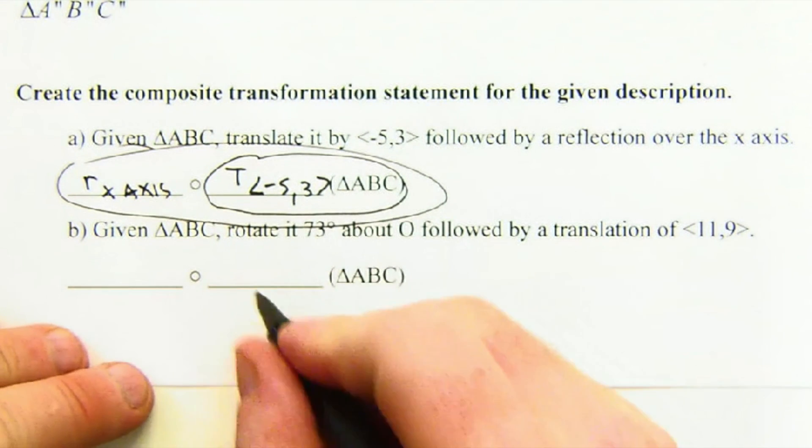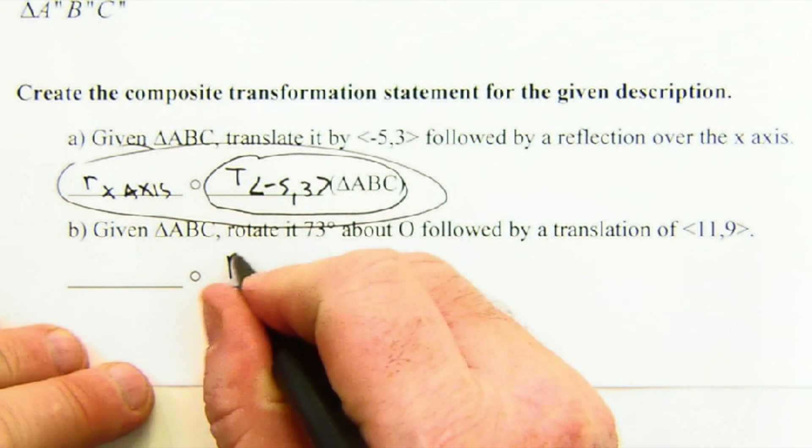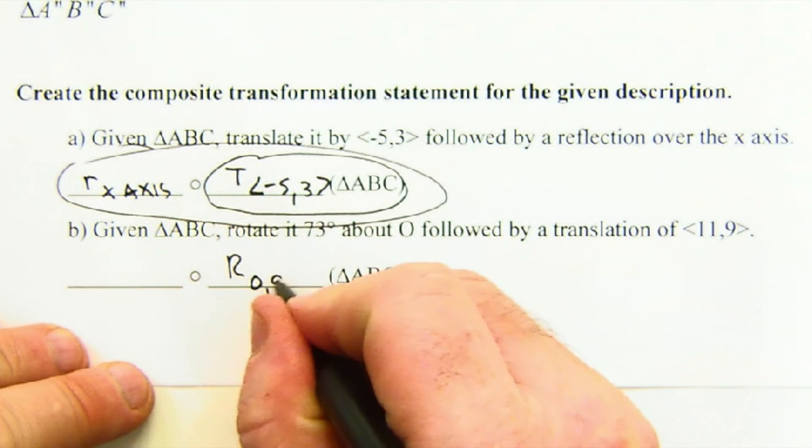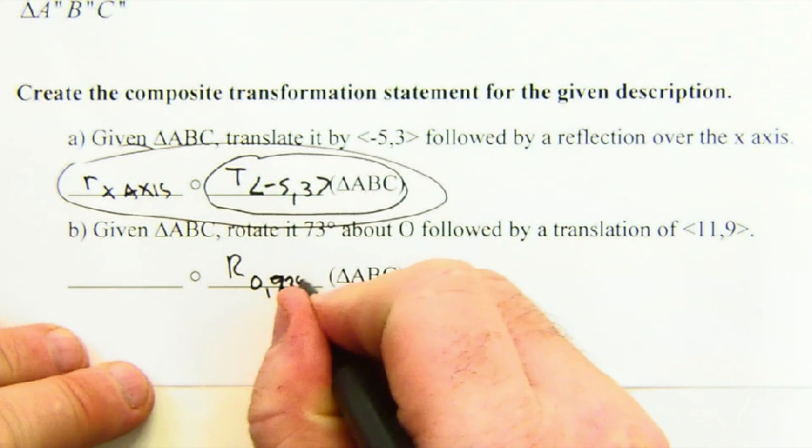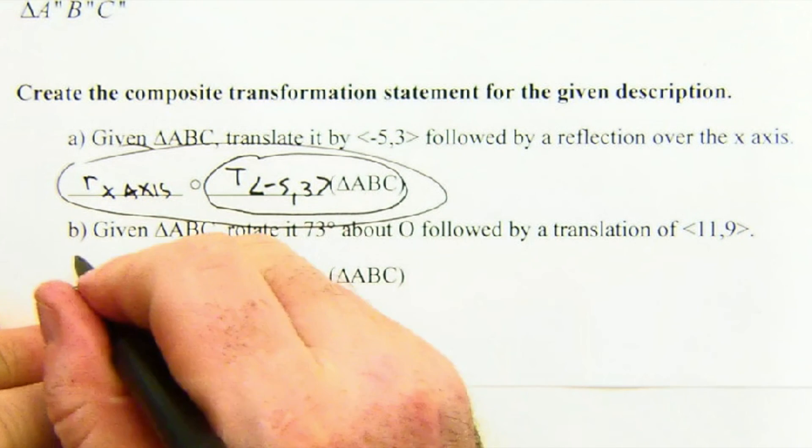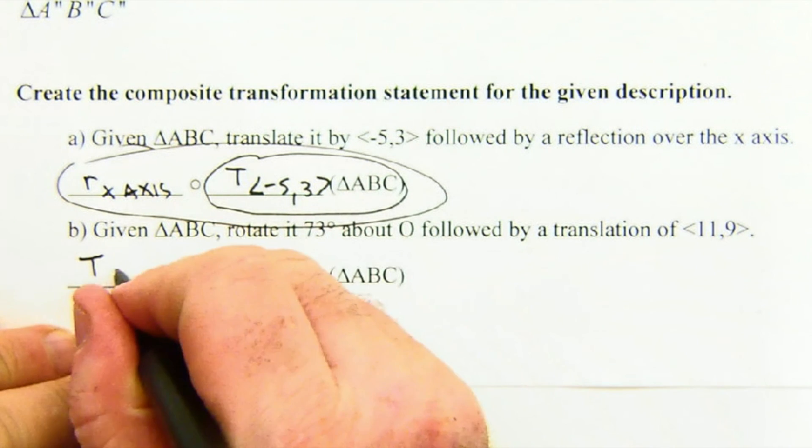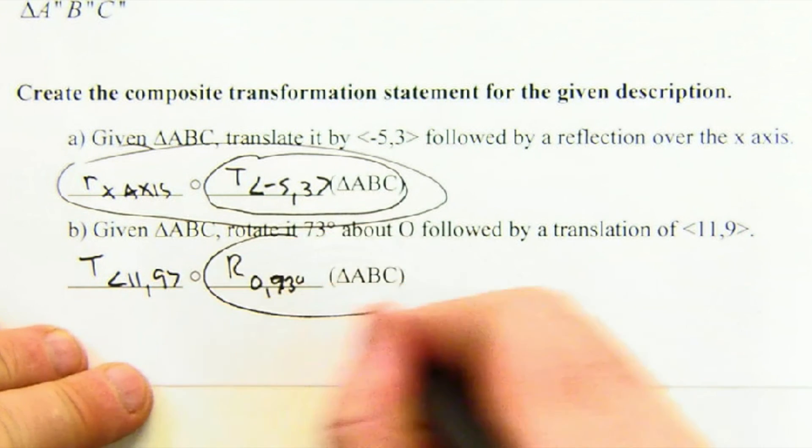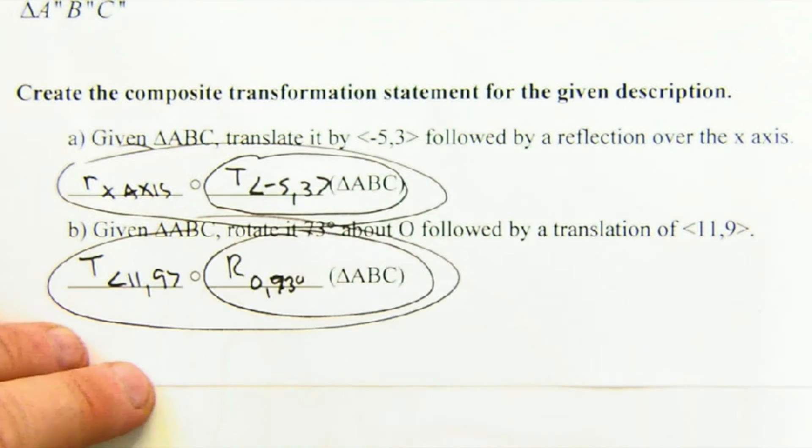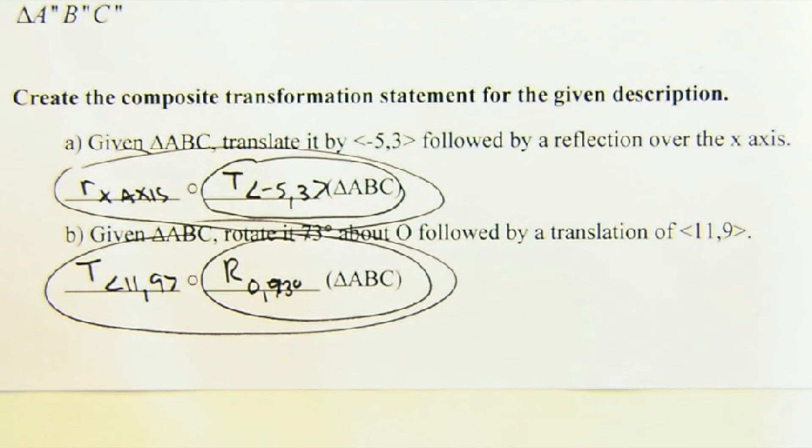Here this says rotate first, so it would be rotate about O 73 degrees, and then translate it by <-11,9>. This happens first, this happens second. Order matters in general, and in composite notation, it's inside out.